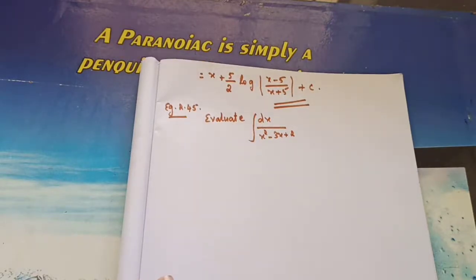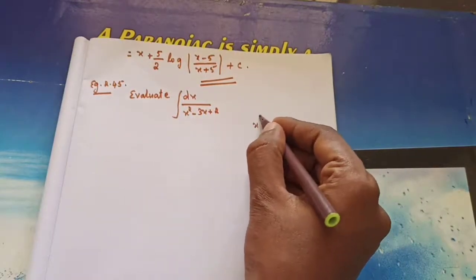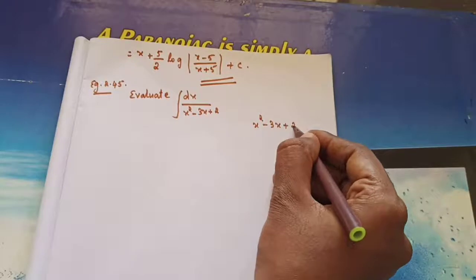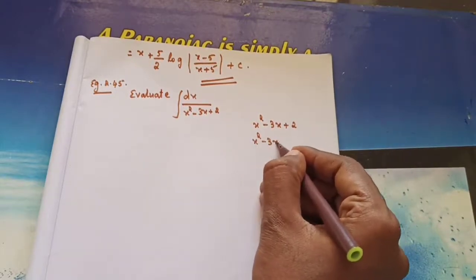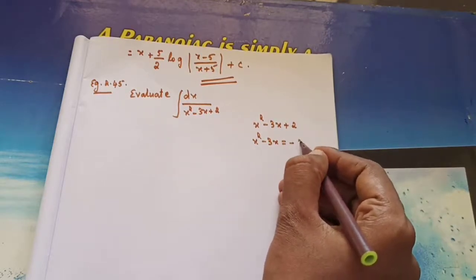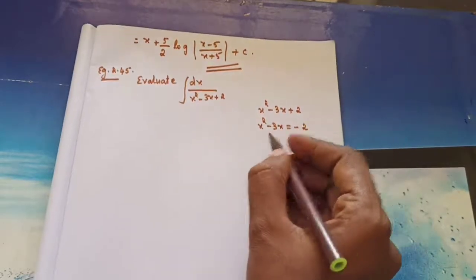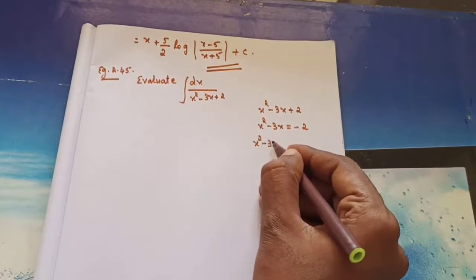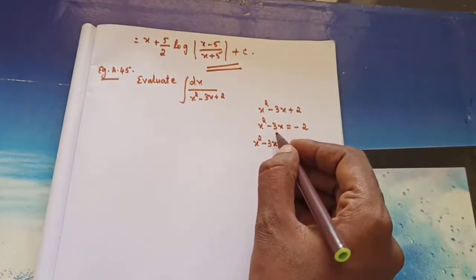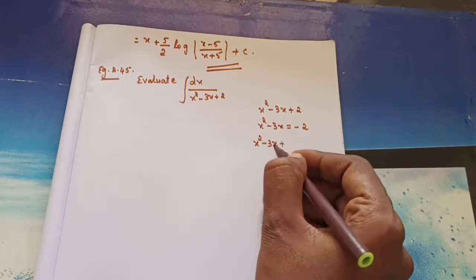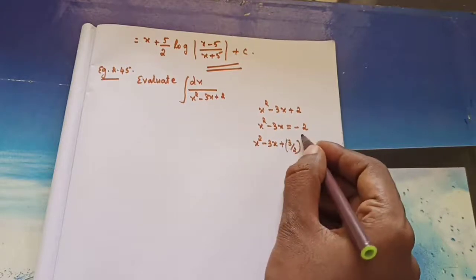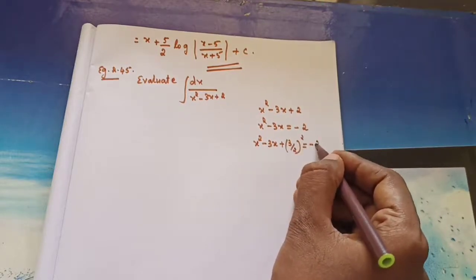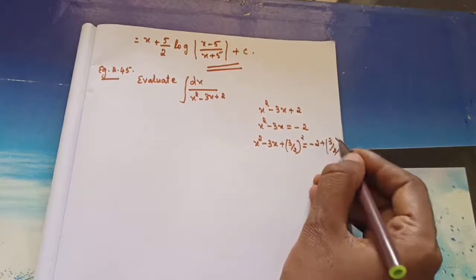First take the denominator: x² minus 3x plus 2. The first step in completing the square: bring the constant to the other side — x² minus 3x equals minus 2. Next step: take half of the coefficient of x, square it, and add on both sides: plus (3/2)².